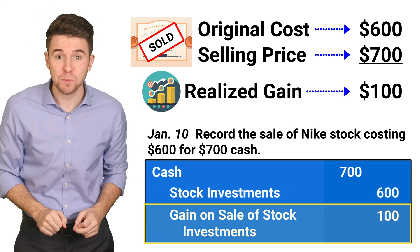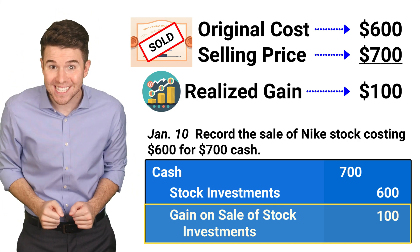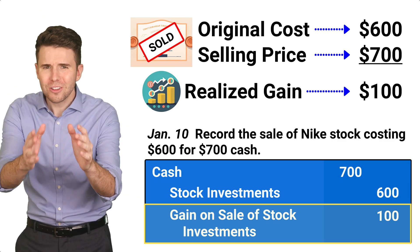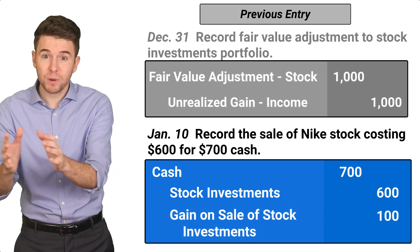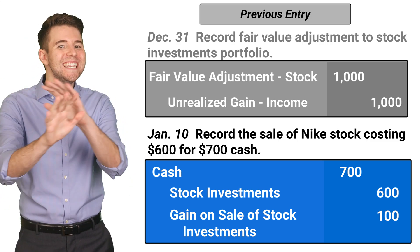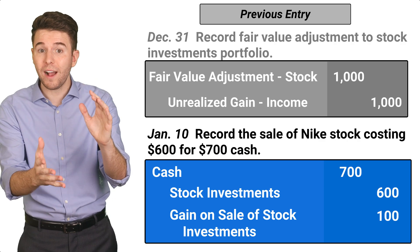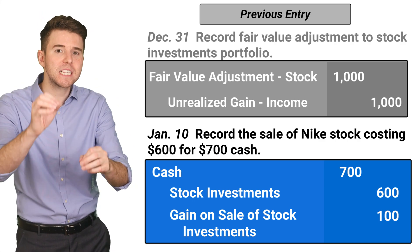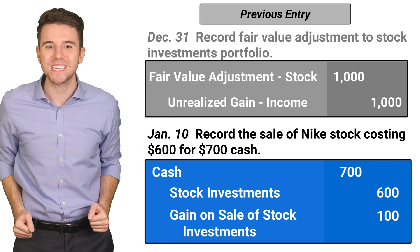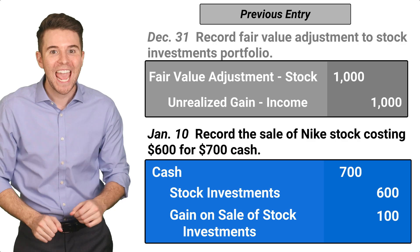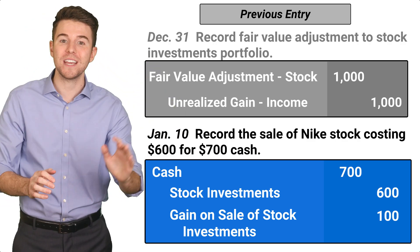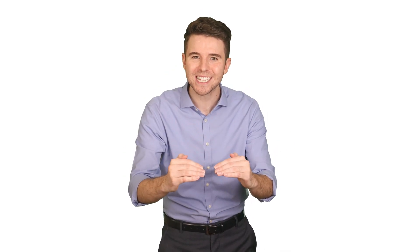The gain on sale of stock investments is reported in the Other Revenues and Gains section of the income statement. Notice that the fair value adjustment we previously made to the stock investments portfolio does not affect the calculation of a gain or loss from the sale of individual stocks. This is because the fair value adjustment pertains to the entire portfolio of stock investments, not to individual stocks, and is calculated at the end of the accounting period. To wrap it up, remember that this accounting is used for equity or stock investments with insignificant influence, which is usually the case when a company owns less than 20% of another company's voting stock.